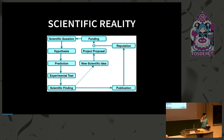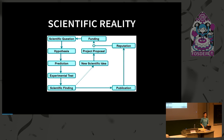As you can see, I'm not mentioning software here yet. Of course software is an important part, especially in the experimental part of this loop, but it's not a key part. It also doesn't really play a big role in the publication or in the reputation — at least not yet.